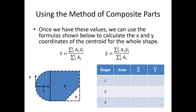Once we get all of those x bar and y bar values and fill out the table, x bar total is calculated as: area one times x bar one, plus area two times x bar two, plus area three times x bar three — all divided by the total area (area one plus area two plus area three). That gives the overall x bar value. For y bar, we do the same thing using the y values: area one times y bar one plus area two times y bar two plus area three times y bar three, divided by the total area.